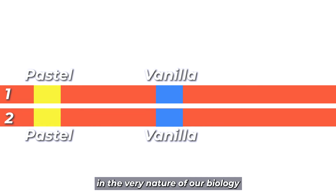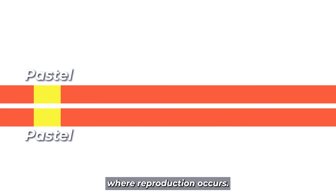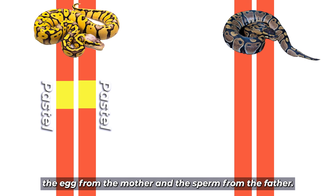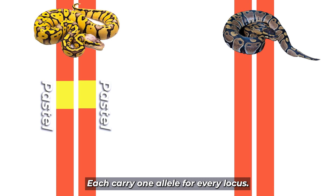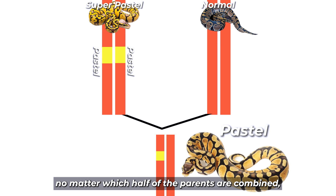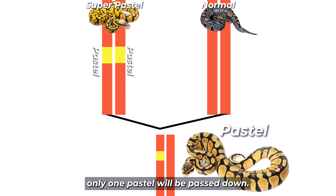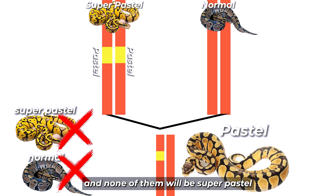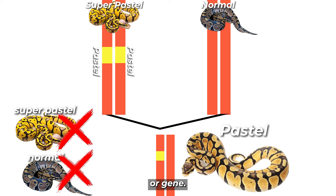The reason for this lies in the very nature of our biology. When reproduction occurs, each parent contributes one set of chromosomes — the egg from the mother and the sperm from the father — each carrying one allele for every locus. So if the mother was a Super Pastel and the father was a normal, no matter which halves of the parents are combined, only one Pastel will be passed down. All the children will be Pastel; none will be normal, and none will be Super Pastel. This logic works independently with every locus or gene.